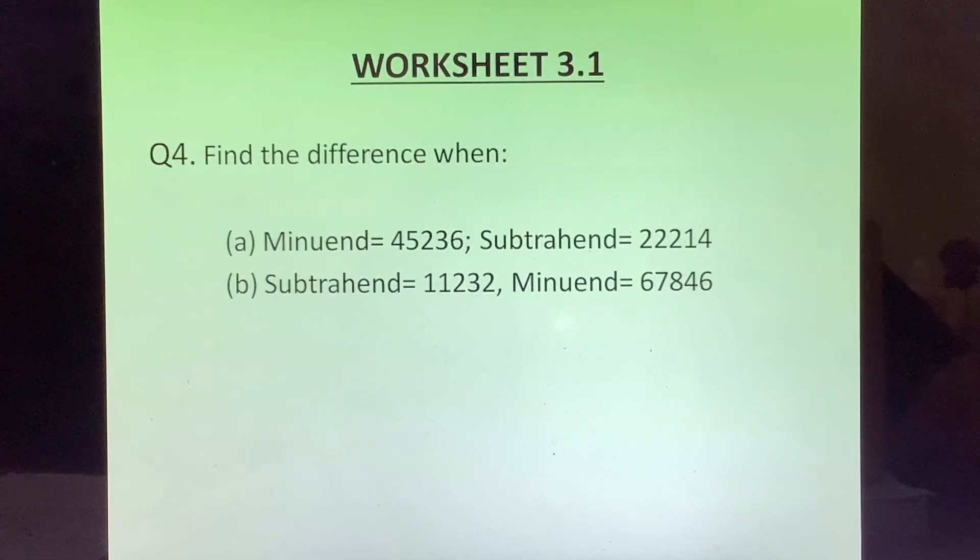Question 4: Find the difference when A, minuend is equal to 45236, subtrahend is equal to 22214. Now in number sentence form it will be 45236 minus 22214. B part: Subtrahend is 11232, minuend is 67846. Now they have changed the order. Be careful to write the minuend on top and subtrahend after that.